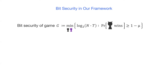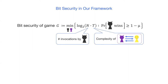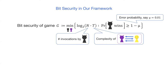In our framework, the bit security is defined as the minimum value of log base 2 of N times T, where N is the number of invocations by the outer adversary and T is the computational cost of conducting the local game. The minimum is taken over all inner and outer adversaries with the restriction that the outer adversary wins the game with probability at least 1 - μ, where μ is some small constant called the error probability. This formulation means that the bit security is the log of the total computational cost needed to achieve winning probability at least 1 - μ.